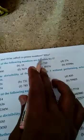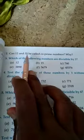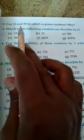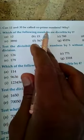Now we see question number 2: can 12 and 35 be called co-prime numbers? Why? To find out, you find the HCF of 12 and 35. When we find the HCF of 12 and 35, the HCF will be 1. So we can say that 12 and 35 are co-prime numbers.